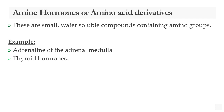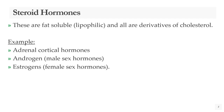Amine hormones, or amino acid derivatives, are small water-soluble compounds containing amino groups. Examples include adrenaline of the adrenal medulla and the thyroid hormones. Steroid hormones are fat soluble and are all derivatives of cholesterol. Examples include adrenal cortical hormones, androgens, and estrogens.